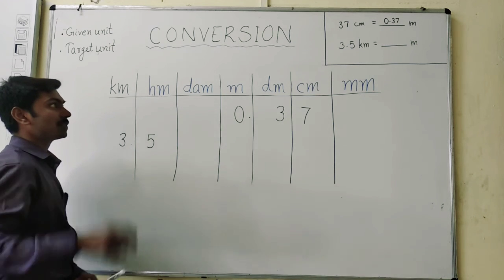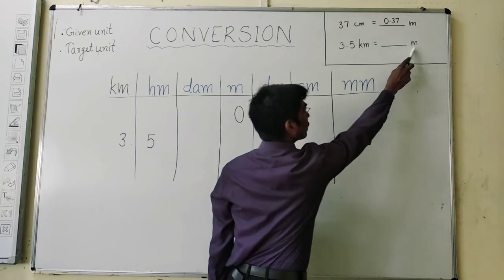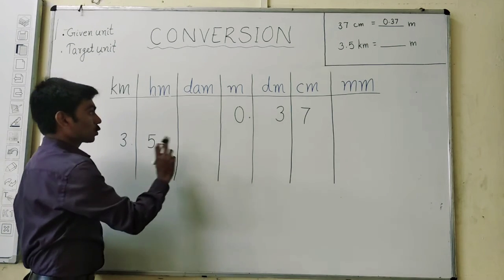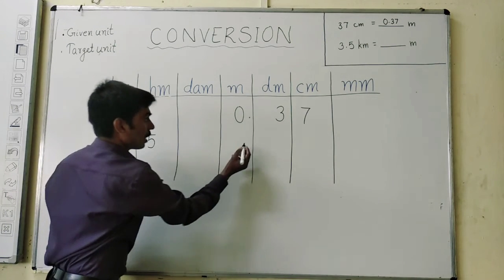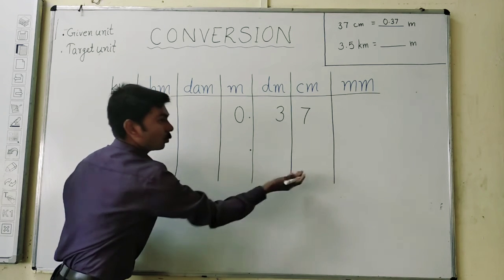After that, the second step is to give a decimal point just after the target unit. The target unit is meter. So after meter, give a decimal point right to it.